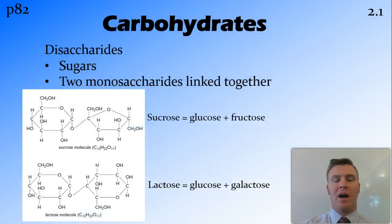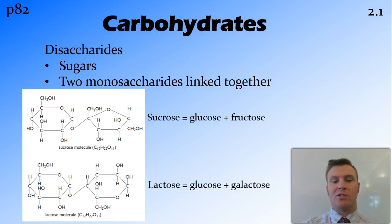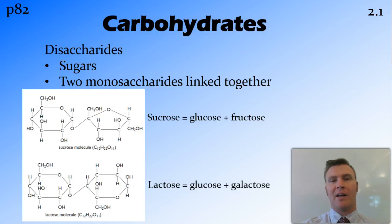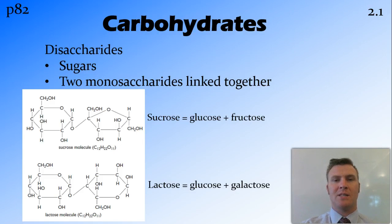Disaccharides are carbohydrates made of two monosaccharides joined together. For example, sucrose — the white sugar you might have on your Weet-Bix — is made of glucose and fructose. And lactose, the sugar found in milk, is made of glucose and galactose. So disaccharides are two saccharides joined together.